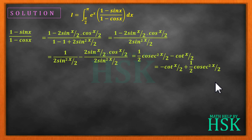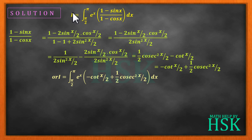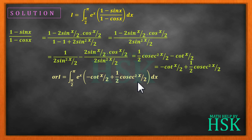So we can write this integral as equal to the integration of e to the power of x into [minus cot(x/2) plus (1/2)·cosec²(x/2)] dx, from the limit pi by 2 to pi.